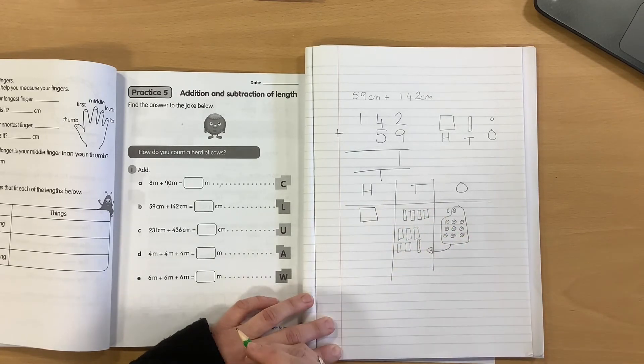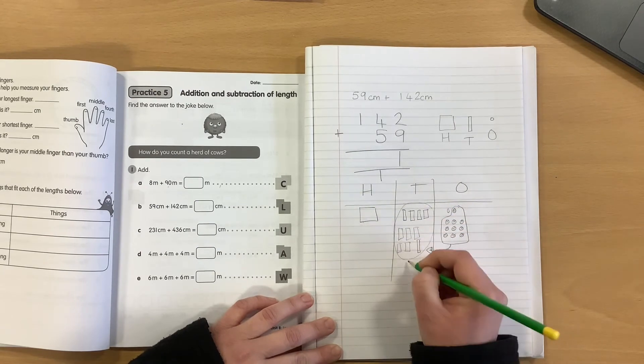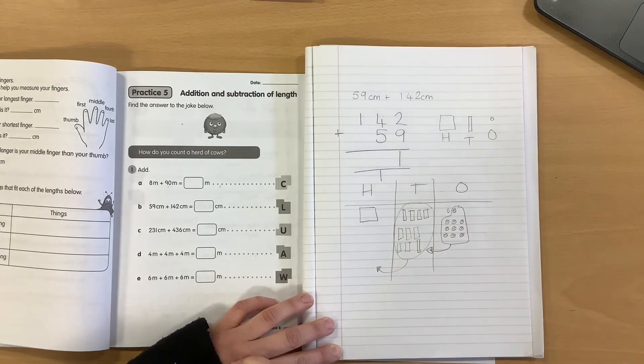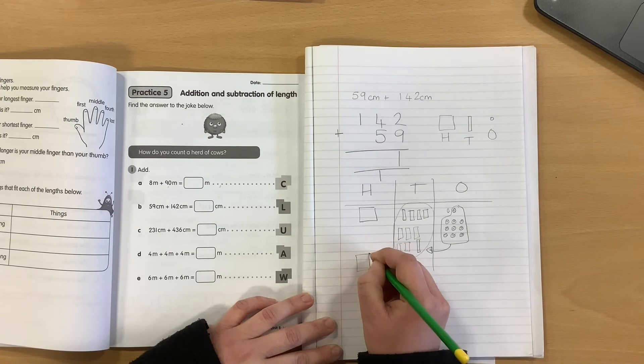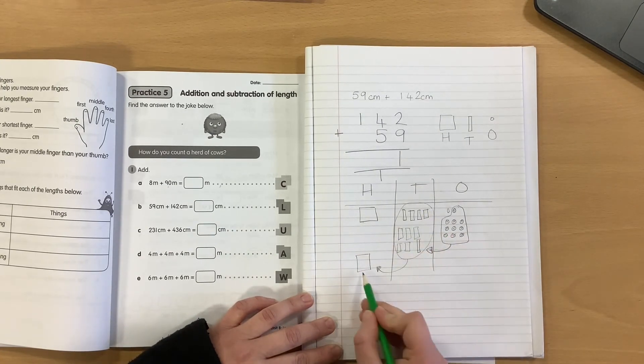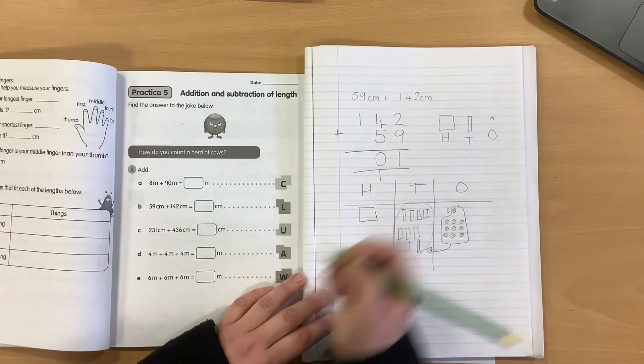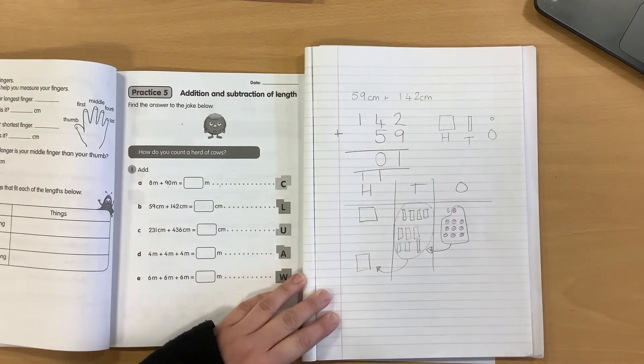So, I can actually regroup all of those into my hundreds column. And there I now have no remaining tens and one regrouped hundred.